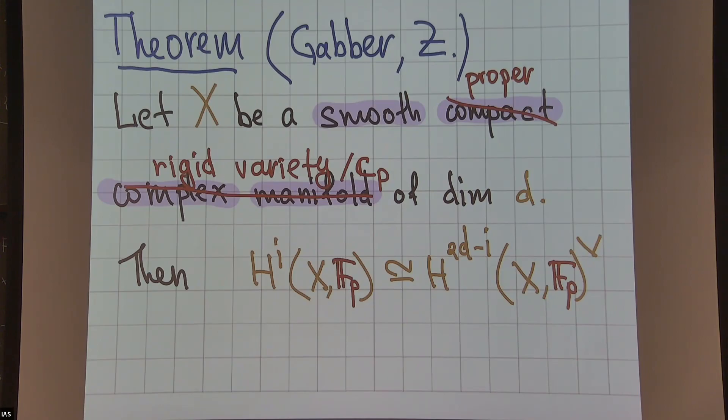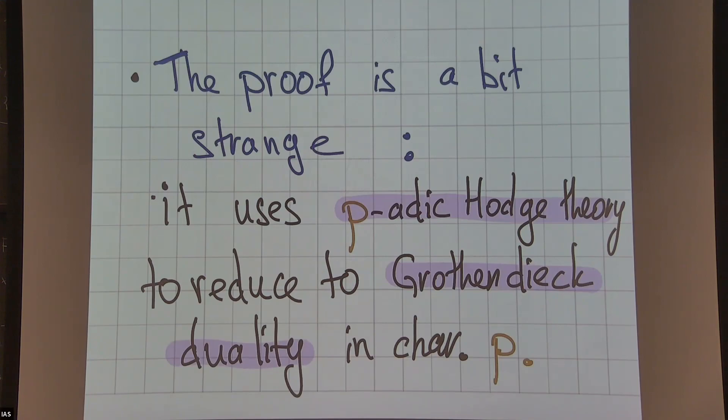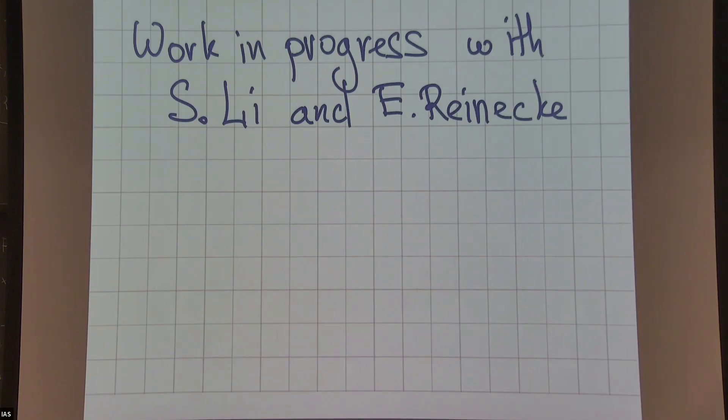This is a result of my thesis following the strategy announced by Kedlaya: if you have a smooth proper rigid variety over C_p or any non-archimedean field, then there is the same Poincaré duality result. Let me say a little bit more about this. The first thing I want to say is that the proof is a little bit strange. Somehow it proves more, but it uses things that are pretty difficult or at least not usually used in Poincaré duality proofs, like Galois cohomology and Gary's course theory. The strategy is to reduce it to some coherent duality using Gary's course theory.